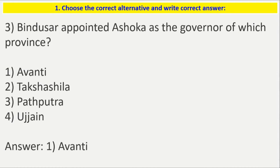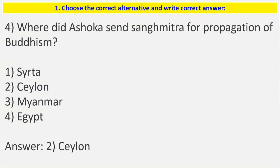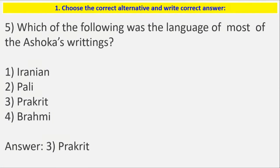Next: Bindusara appointed Ashoka as the governor of which province? The correct answer is Avanti. Next question: where did Ashoka send Sanghmitra for the propagation of Buddhism? The options are Sri Lanka, Myanmar, or Egypt. The correct answer is Sri Lanka (Ceylon).